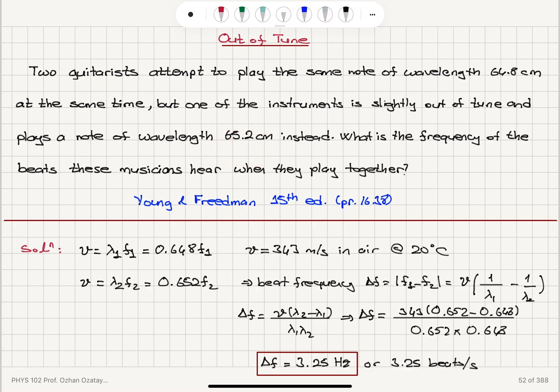Lambda 2 is 65.2 cm. Lambda 1 is 64.8 cm. When we substitute, we find the beat frequency to be 3.25 hertz or beats per second.